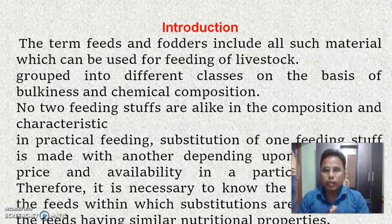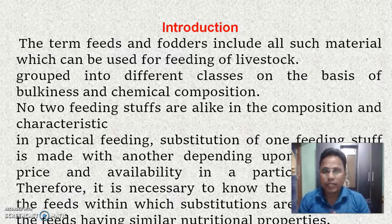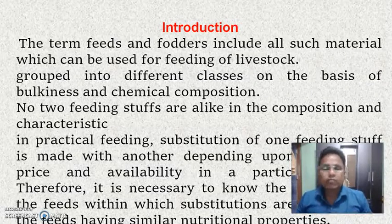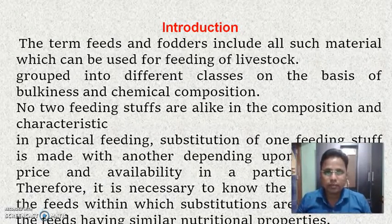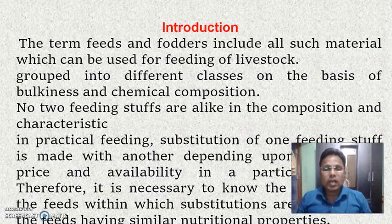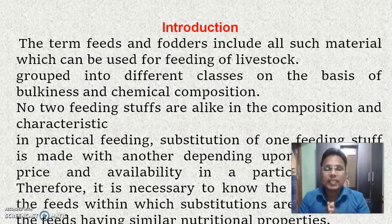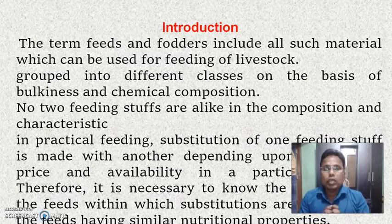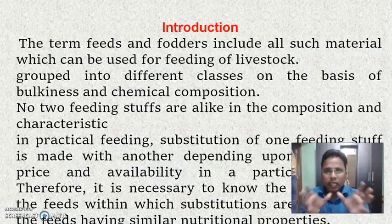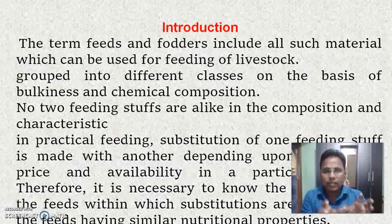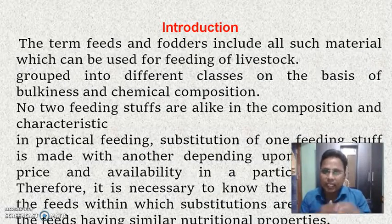The feeds and products include all certain materials which can be used for feeding of livestock. Whatever we are using to feed such livestock — all those materials are called feeds and products. These feeds and products are generally grouped or classed on the basis of the bulkiness and chemical composition of that feed material. Every feed material has its own self-identity in its composition.